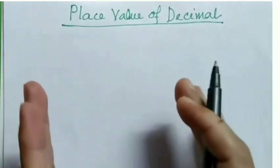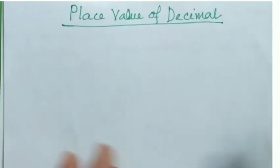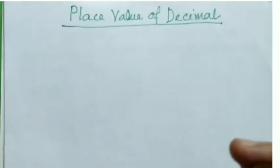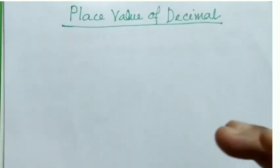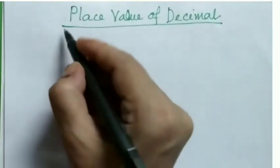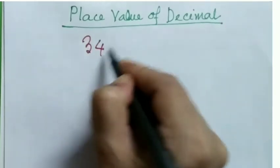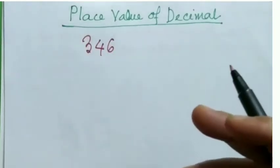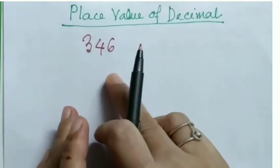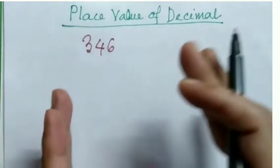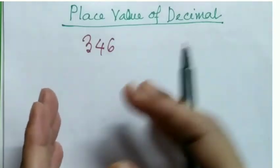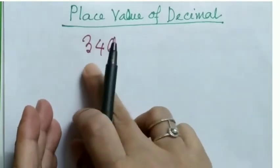Let's understand the place value of decimals. But before that, let's have a recall on place value of whole numbers, which I know all of you have covered in your previous classes. Let me take the number 346. In every number, each digit has a place value.